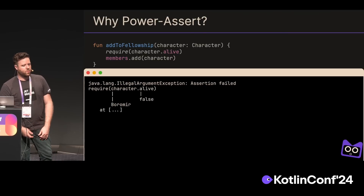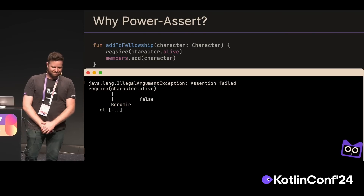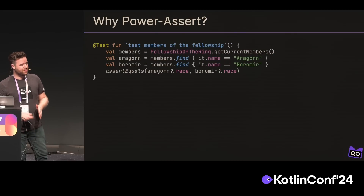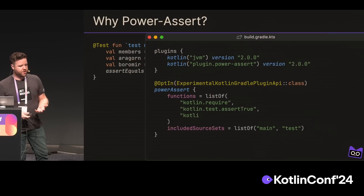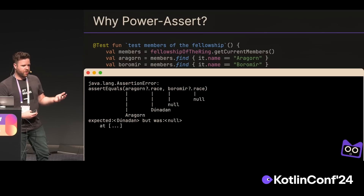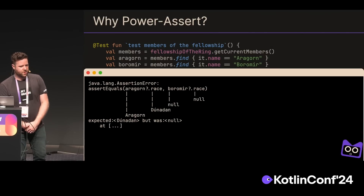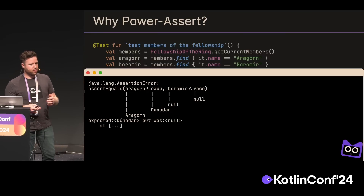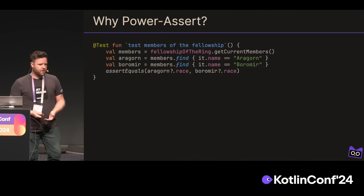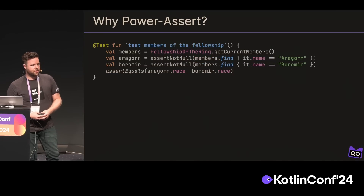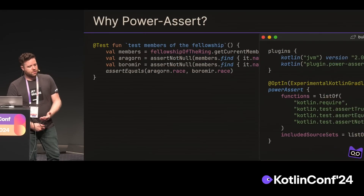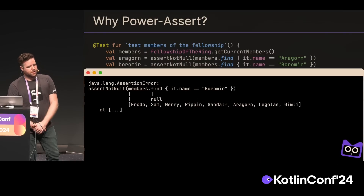With that configured, we can now see that yes, Boromir died. It doesn't have to just be Boolean functions either — we can configure assert equals and get the same output for all of the parameters in the function. There's a subtle bug in this test: if we could not find Aragorn and Boromir, we'd get null is equal to null and the test would actually pass. So we might want to use assert not null to assert that we did find Boromir and Aragorn. We can configure this one as well, and now we'd get a more eager failure that we were unable to find Boromir.